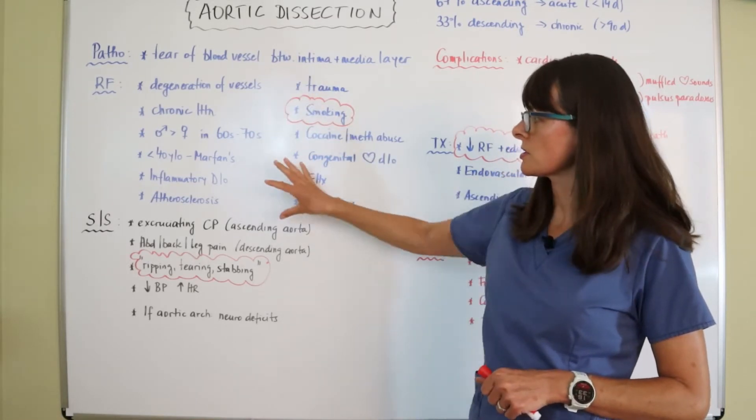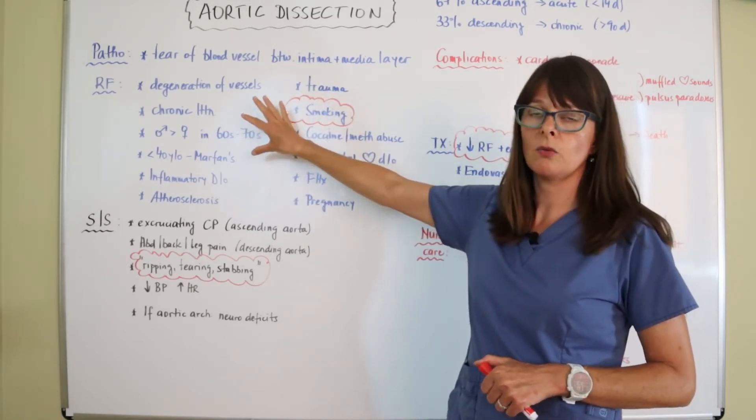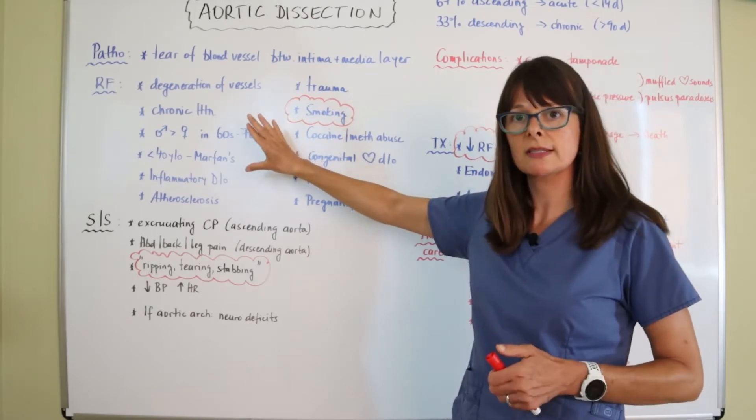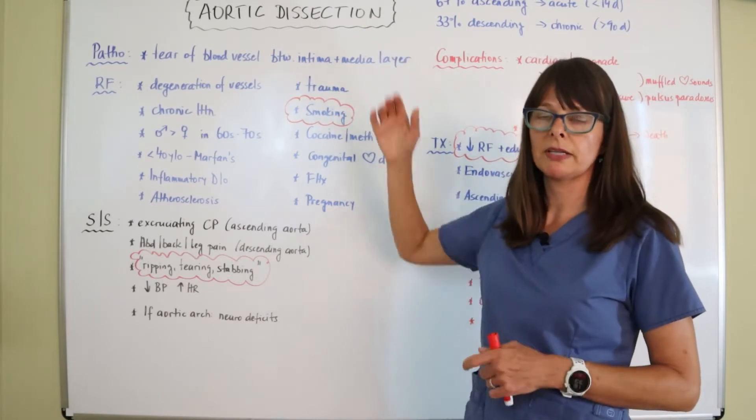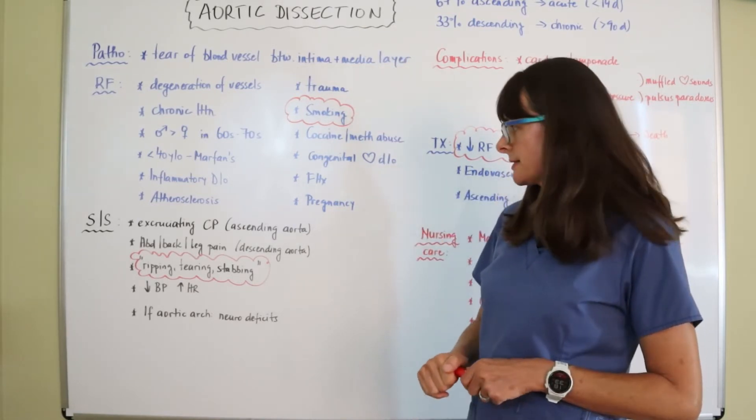And so these risk factors just always tell us that when the patient presents with certain signs and symptoms, and if any of these risk factors apply, then we have to really think about, could this be an aortic dissection?